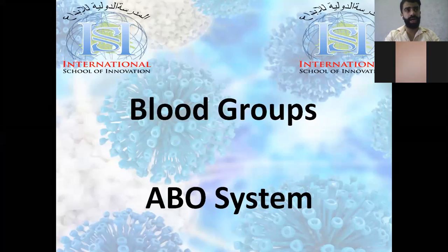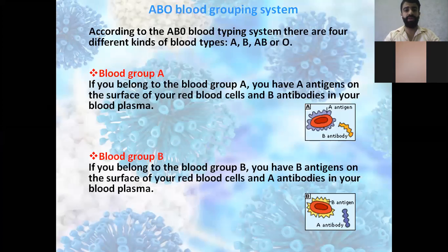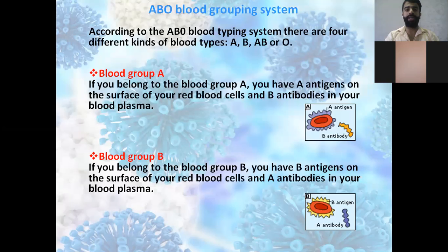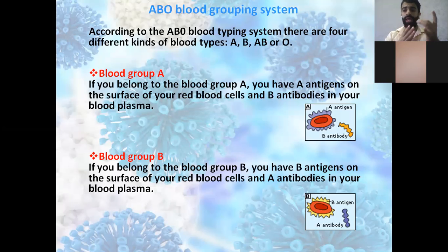Now let's move to the blood groups — the ABO system. We have four different blood groups: blood group A, blood group B, blood group AB, and blood group O.